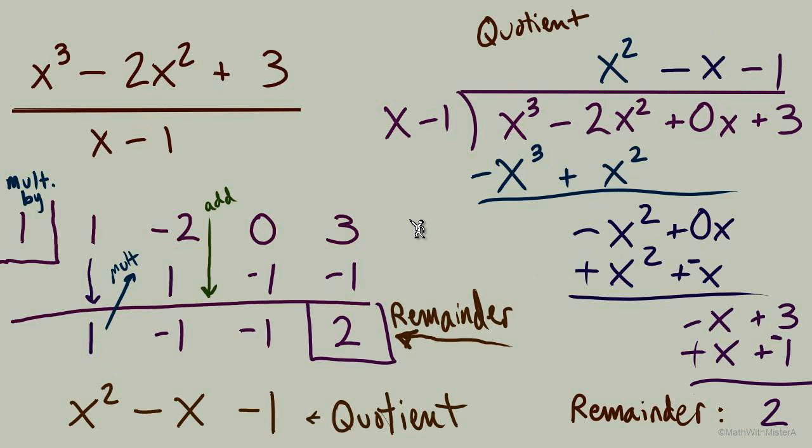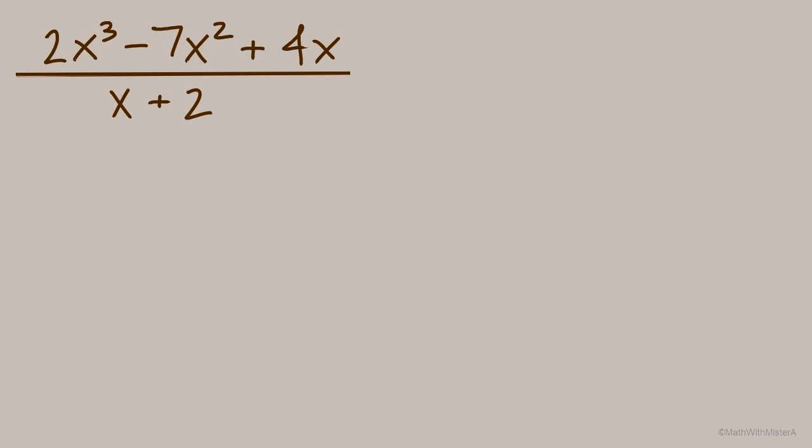2x cubed minus 7x squared plus 4x divided by x plus 2. Synthetic division. So for our divisor, we're using not the factor, but the 0, negative 2. And we'll set up our dividend using just the coefficients. And we have to make sure that we have all of our terms in descending order. So positive 2, then negative 7, 4 from the 4x. And we have to have a column for a constant. If we don't have one, like in this example, we'll put in a 0 for the placeholder.